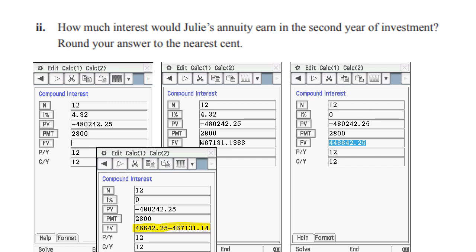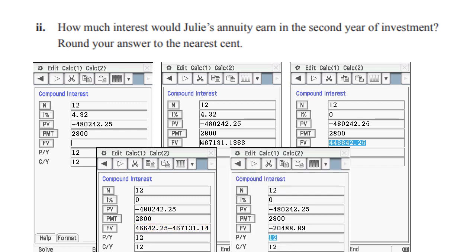So just to remind ourselves what we did there we took the 46713.14 minus the 44642.25 and that equals 2048.89 to the nearest cent.